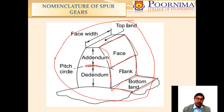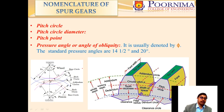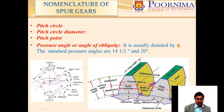The pitch circle is shown in detail along with the addendum circle and the dedendum circle. The pitch circle is an imaginary circle by which pure rolling action would give the same motion as the actual gear.